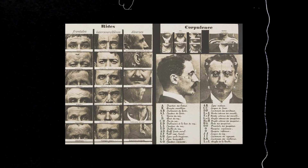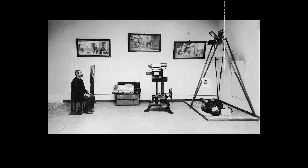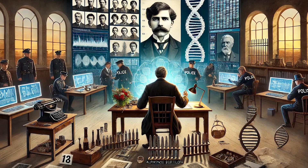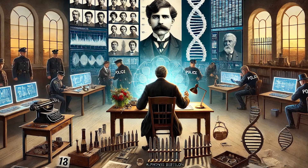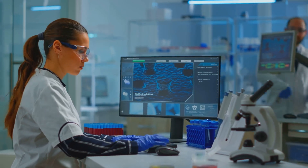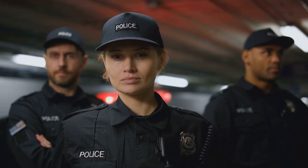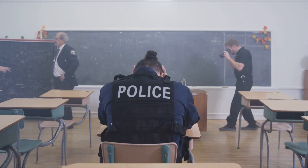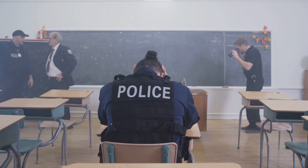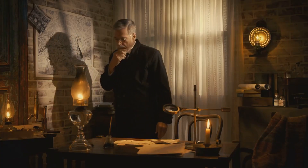Alphonse Bertillon's work laid the foundation for modern forensic science. His emphasis on standardization, meticulous documentation, and the scientific approach to criminal identification transformed law enforcement. Even though his anthropometric system was eventually replaced, his methods paved the way for advancements like fingerprinting, DNA analysis, and modern crime scene investigation. Bertillon's legacy can also be seen in the way police work evolved to embrace technology and data — his belief in the power of measurement and observation remains a cornerstone of forensic science. From the standardized mugshot to crime scene photography, his influence is still felt in police departments around the world.